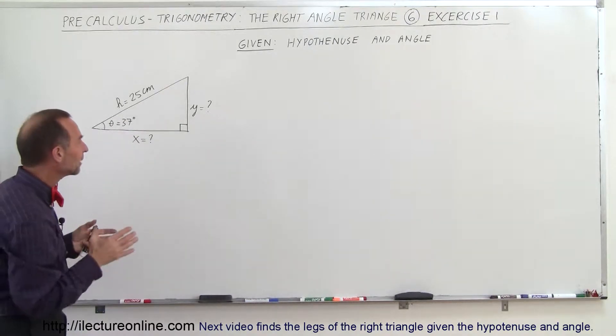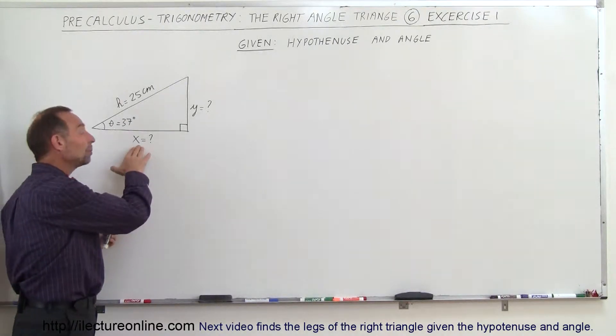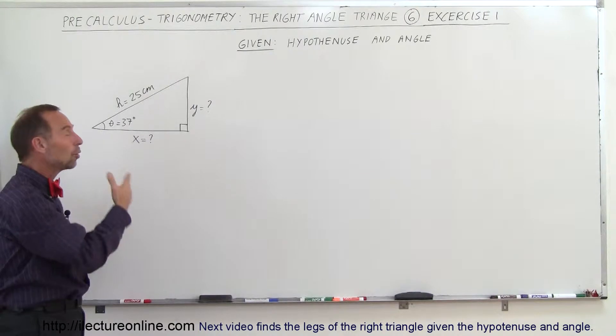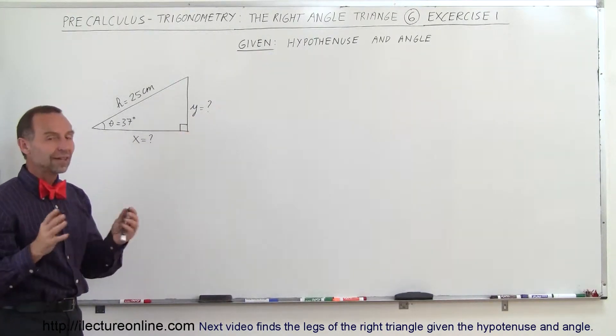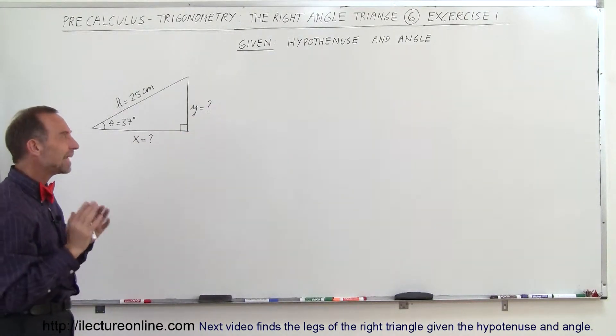Now from experience, what we'll find is that quite often x will be associated with using the cosine of the angle, y will be associated with using the sine of the angle, but that's not always the case. That could be a dangerous thing to do.